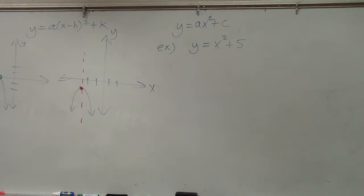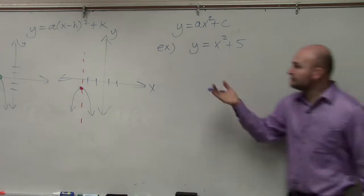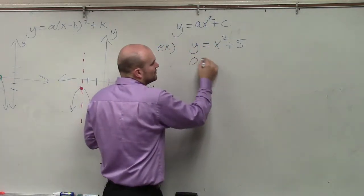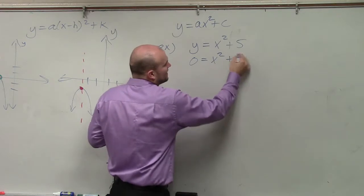Now, when we're going over this one, the next thing that we want to do, we have y equals x squared plus 5. So again, set your y equal to 0. So you have x squared plus 5.